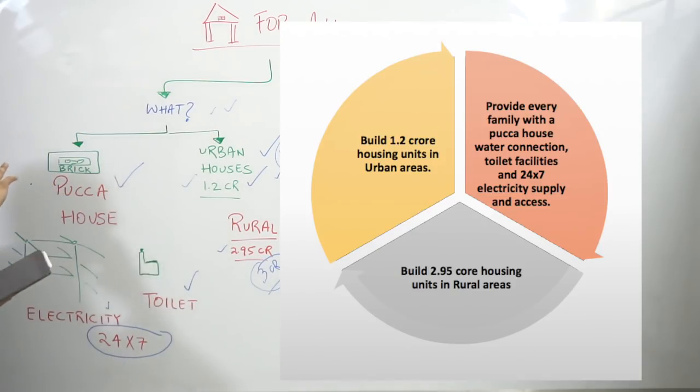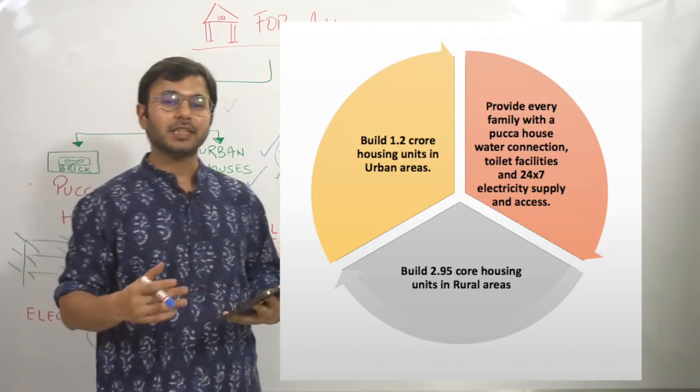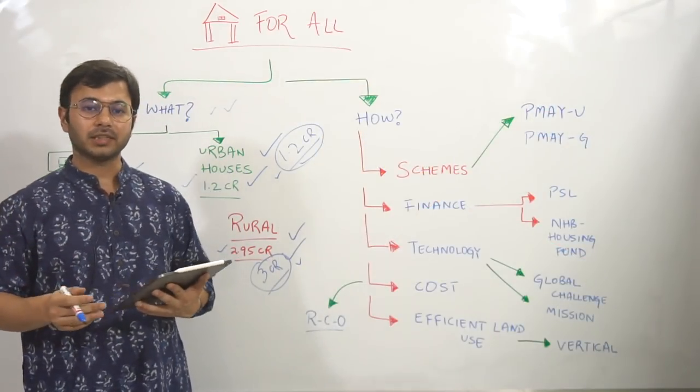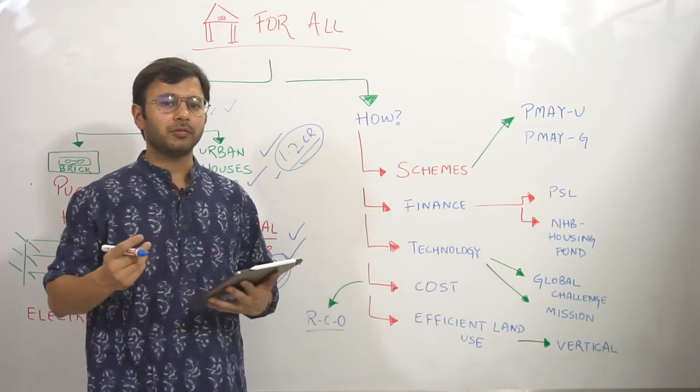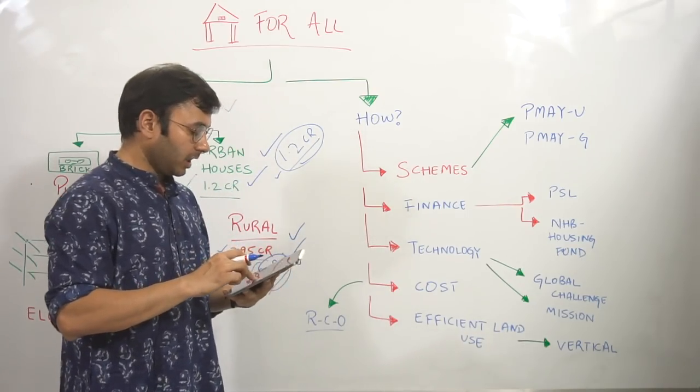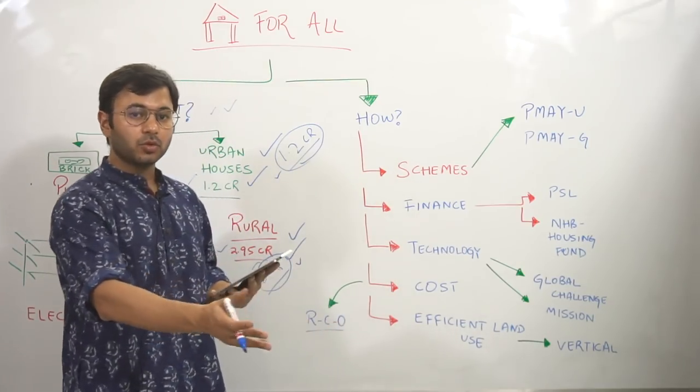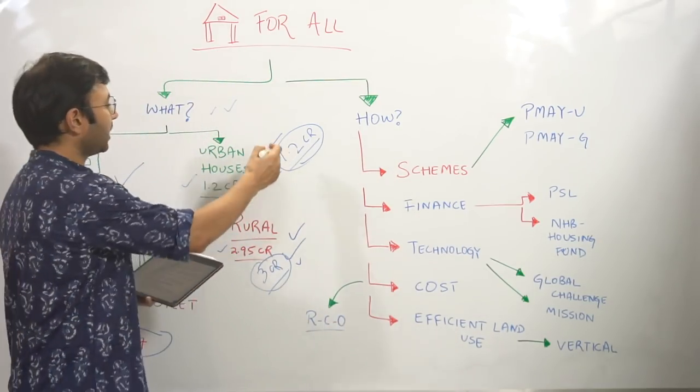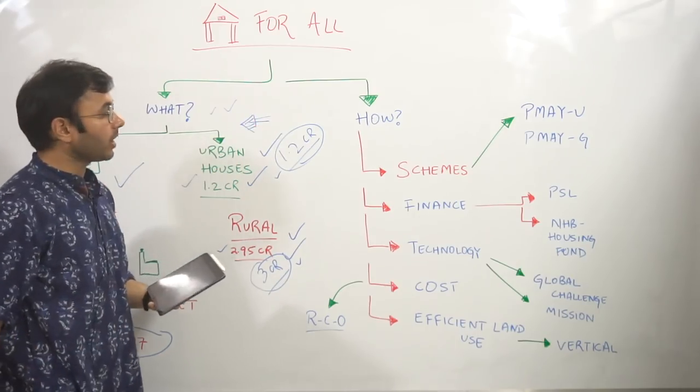So this is the what part. Why exactly, what exactly is the situation when we can say that now our country has provided housing for all. And the second question which pops up in your mind is how exactly to do it. So what are the things that are required to be done in order to say that these are the things that we need to do in order to ensure that everybody in reality has housing for all.